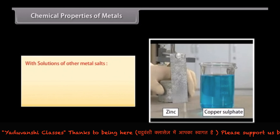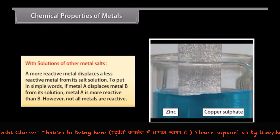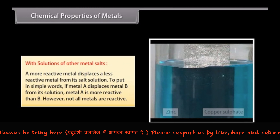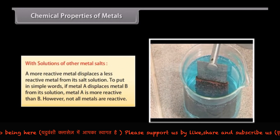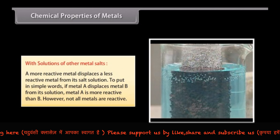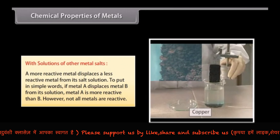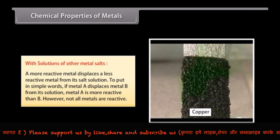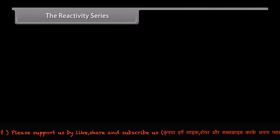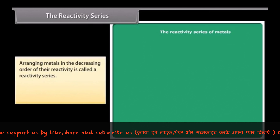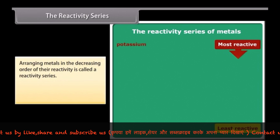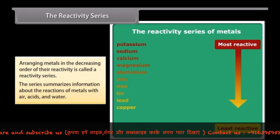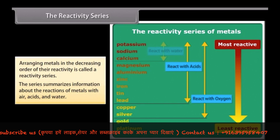With solutions of other metal salts: a more reactive metal displaces a less reactive metal from its salt solution. If metal A displaces metal B from its solution, metal A is more reactive than B. However, not all metals are reactive. In this reaction, the copper contained in the copper sulfate is replaced by zinc. The reactivity series: metals arranged in decreasing order of their reactivity is called a reactivity series. It is used to summarize information about the reactions of metals with air, acids, and water.